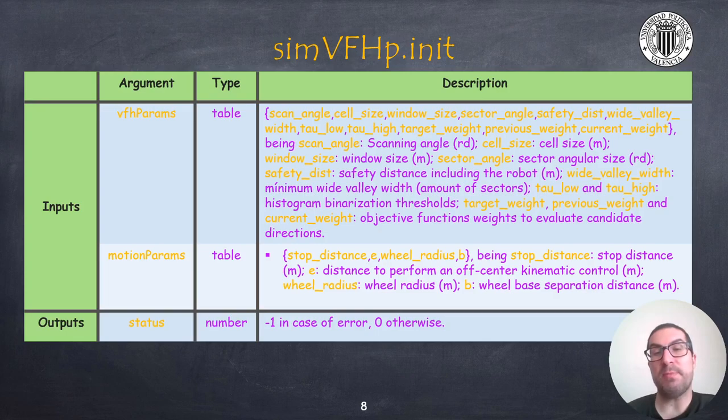Later I will explain what each of these parameters represent. The algorithm assigns a default value for each of the parameters so you can even provide an empty list for each of the parameters and then you will use the default values. In case of an error, the function will return minus one, otherwise it will return zero.